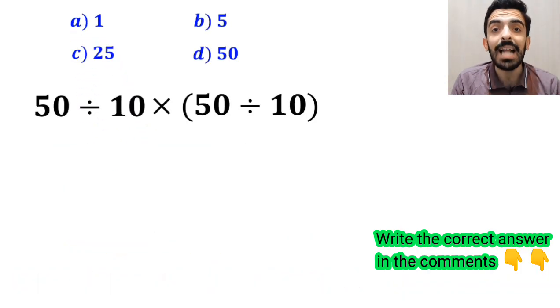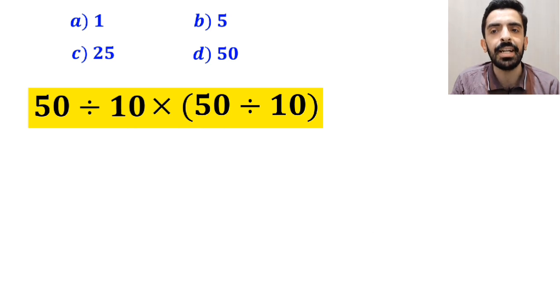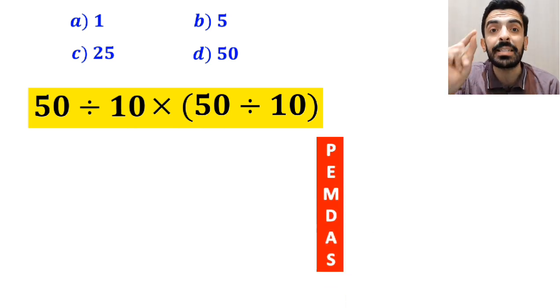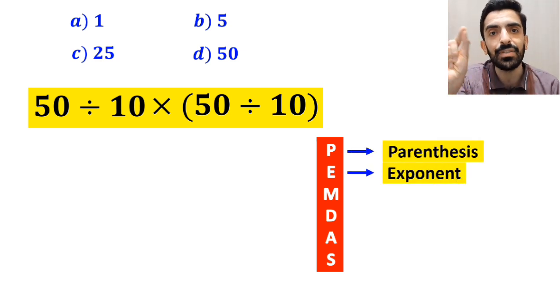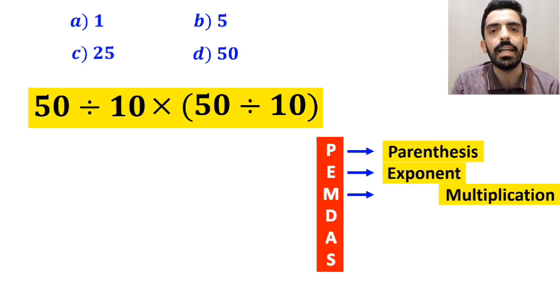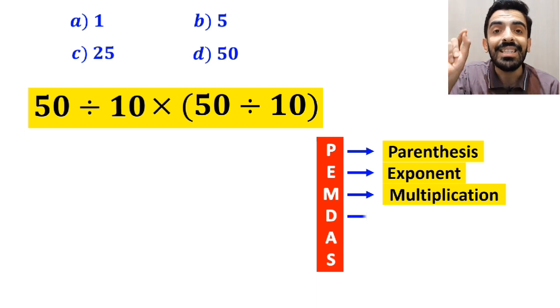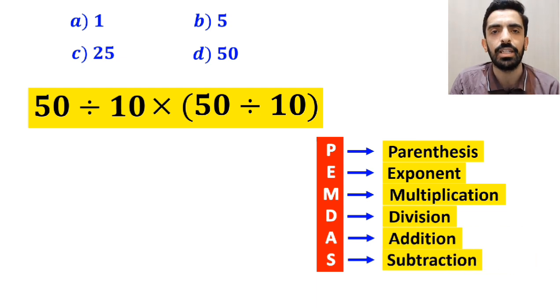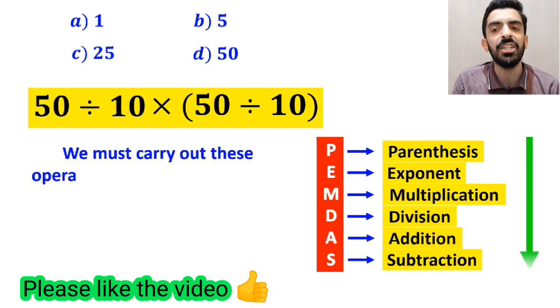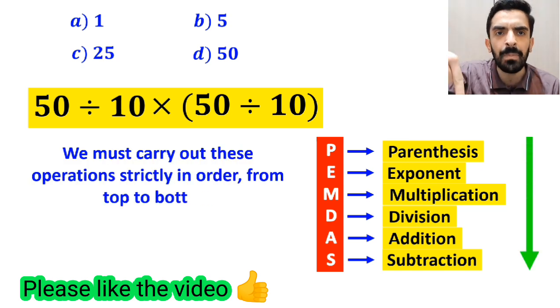Now let me explain how to solve this expression properly. To solve this question, we need to follow the PEMDAS rule step by step. According to this rule, P stands for parenthesis, E stands for exponent, M stands for multiplication, D stands for division, A stands for addition, and S stands for subtraction. We must carry out these operations strictly in order from top to bottom.